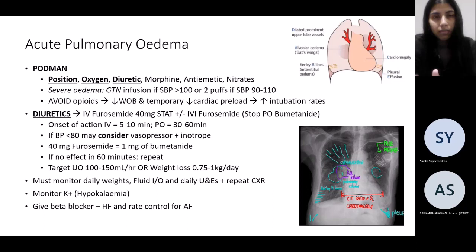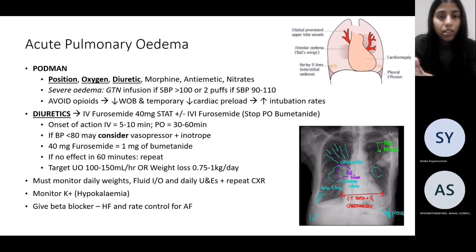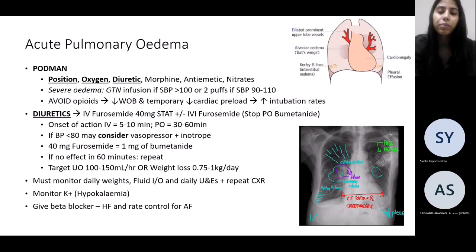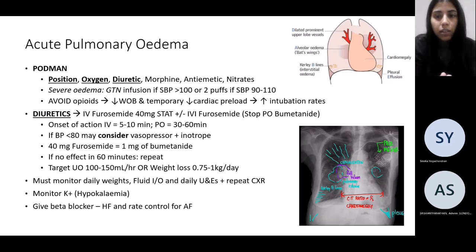Give oxygen and diuresis — the most important part of management for pulmonary edema is diuresis. Morphine is debated; it helps manage the anxiety around shortness of breath rather than providing direct clinical benefit for the edema itself. Always prescribe an anti-emetic as a reflex with morphine. Nitrates are given providing blood pressure can tolerate it.